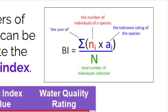The Biotic Index can be calculated by using this equation. Simply put, you take the total sum of the number of individuals of a species multiplied by their tolerance rating and divide by the total number of organisms that were collected. This will give you a value to compare to the chart.